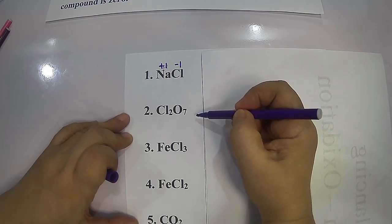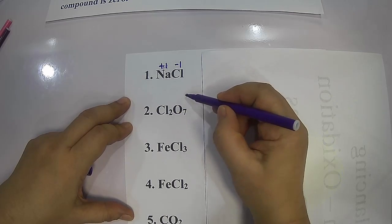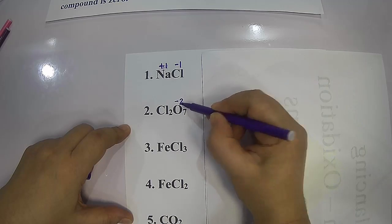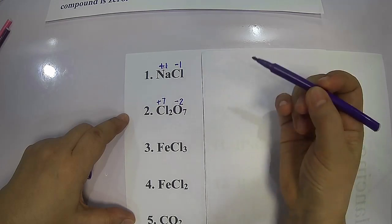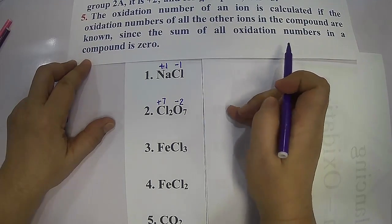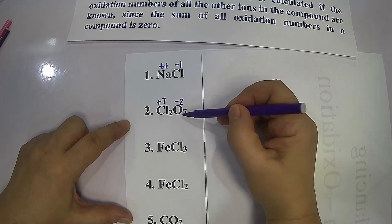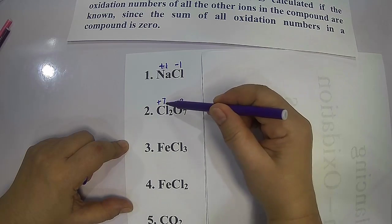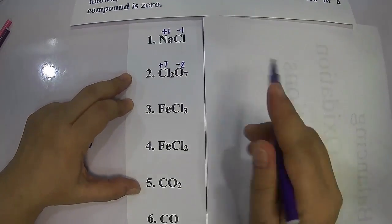In the next example, we have dichlorine heptoxide (Cl₂O₇). The sum: positive 14 plus negative 14 equals zero.